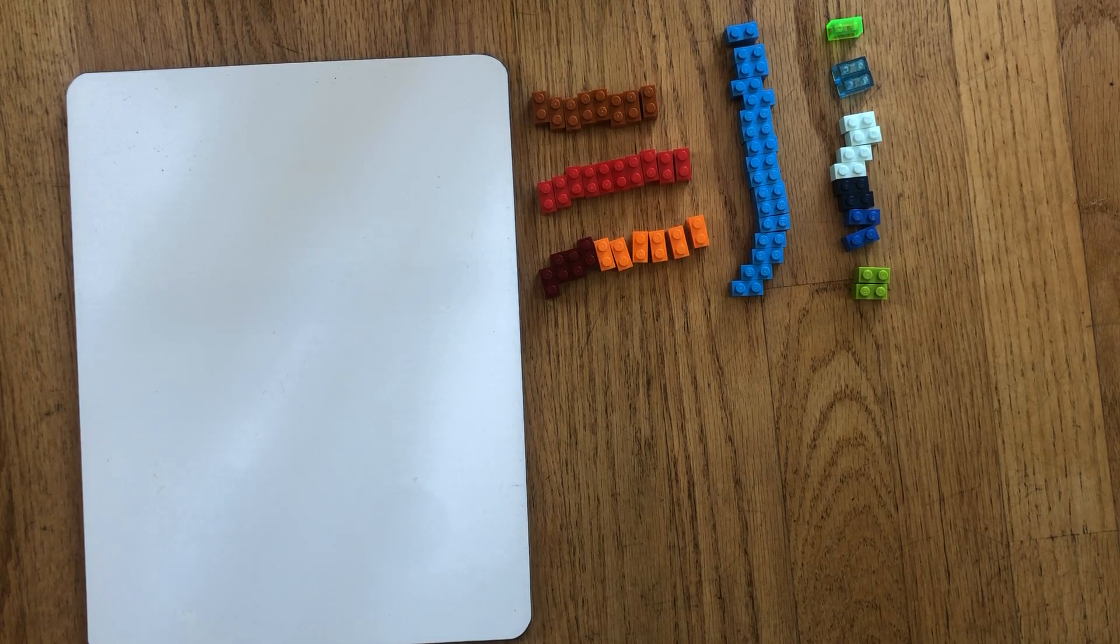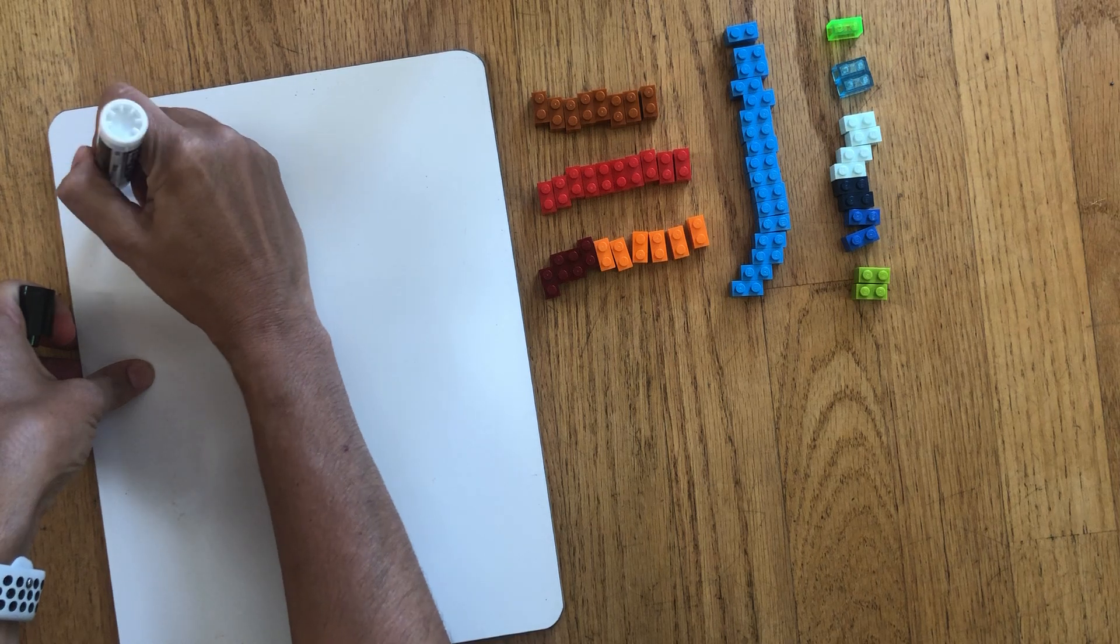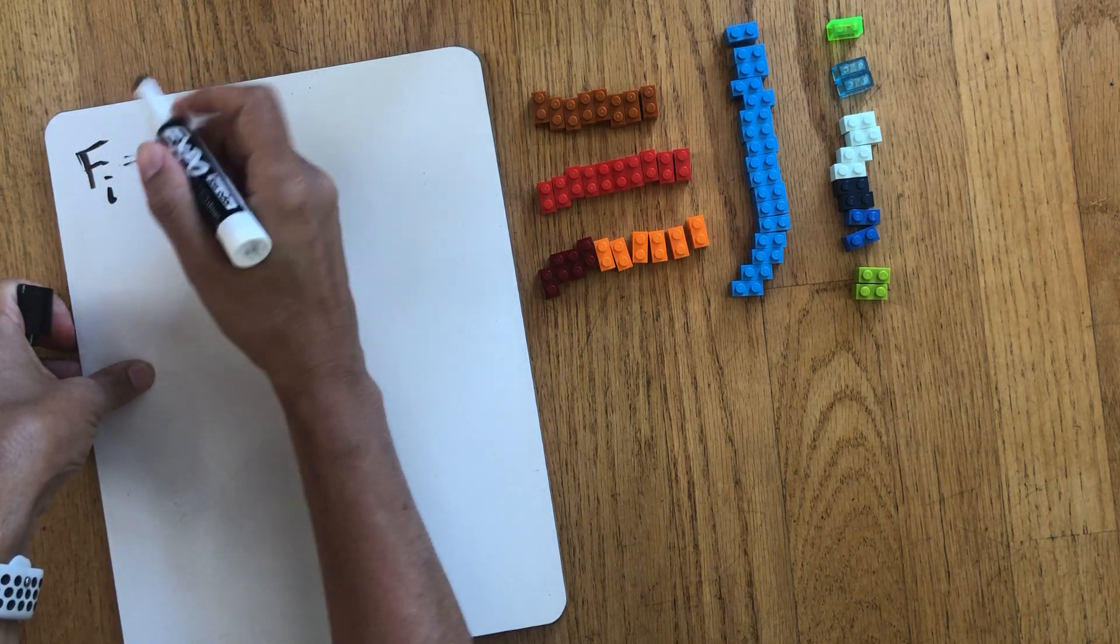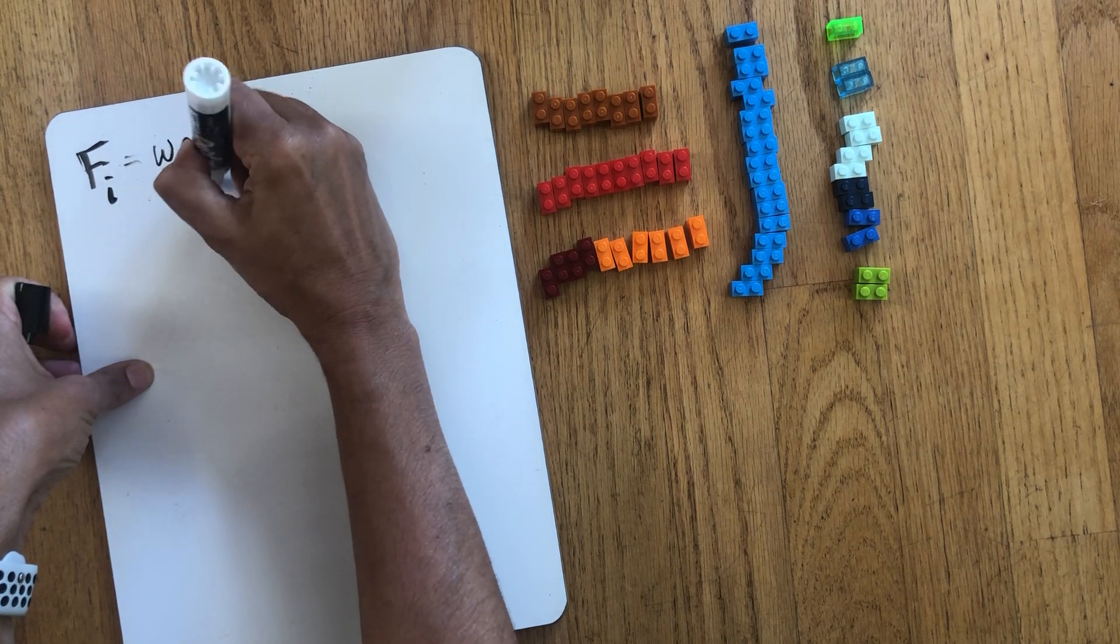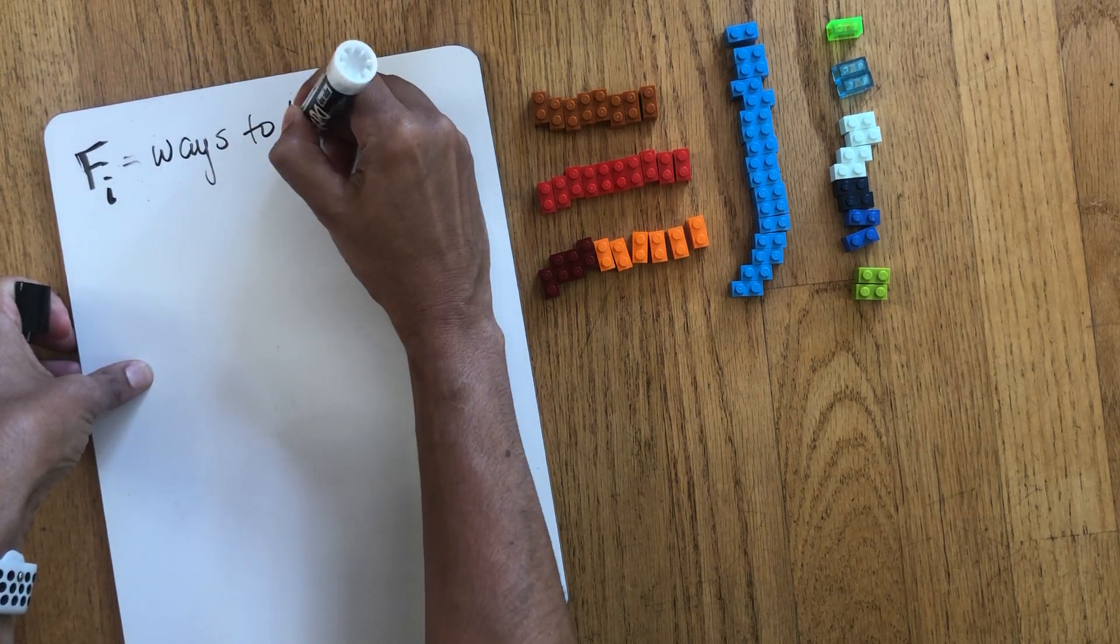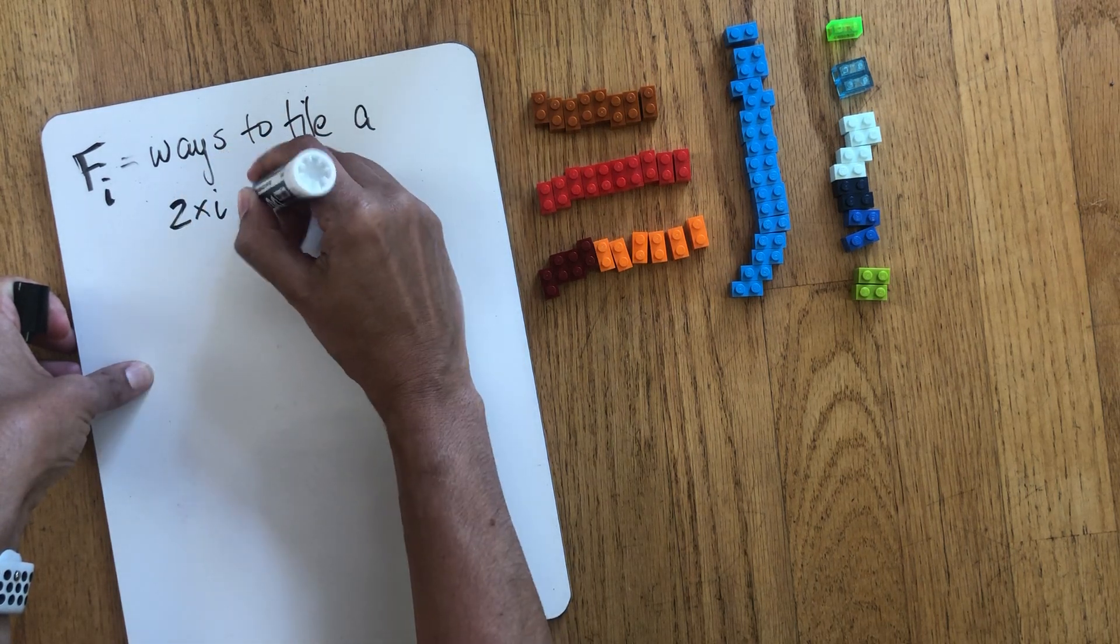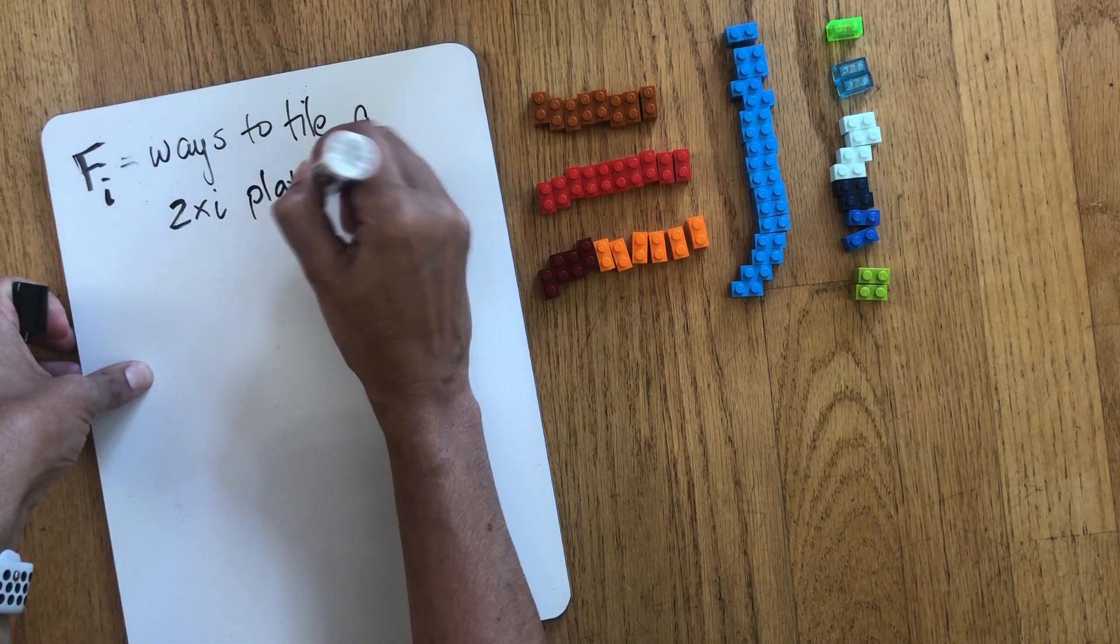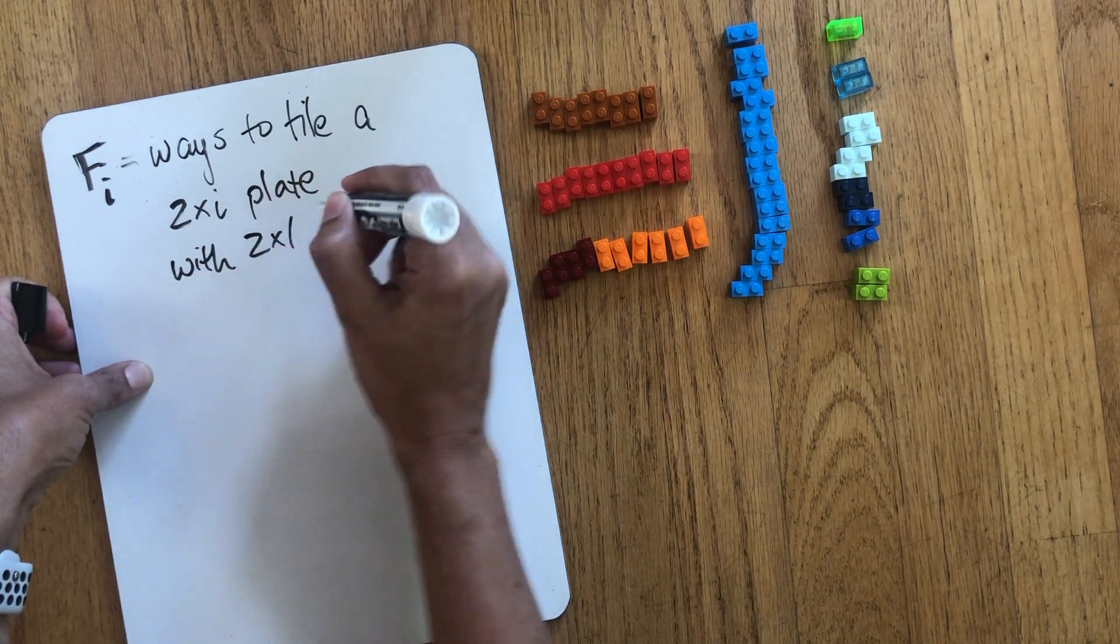All right, so the problem that we're going to think about right now is we're going to let F_i be ways to tile a 2×i plate with 2×1 Lego.